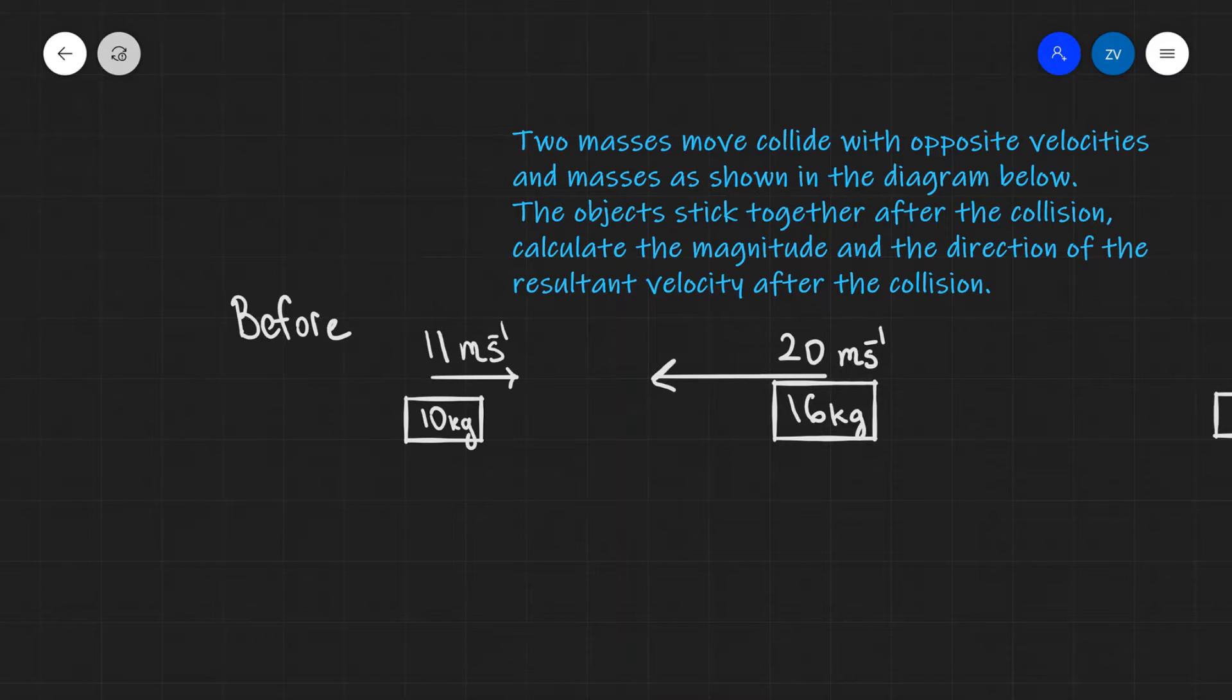Today we are going to be looking at collisions. Let's have a look at this example question. We have two masses which collide with opposite velocities as shown in the diagram. We have a 10 kilogram mass which is moving to the right and a 16 kilogram mass which is moving at 20 meters per second to the left.